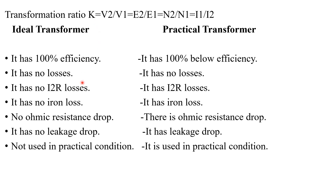Now let us discuss about the difference between ideal and practical transformer. In the case of an ideal transformer, its efficiency will be 100%. For a practical transformer, its efficiency will be below 100%. An ideal transformer has no losses, while a practical transformer has losses. An ideal transformer has no I-squared-R or copper losses, whereas a practical transformer has copper losses and iron losses. The ohmic resistance of an ideal transformer is considered as zero, but there will be some ohmic resistance in a practical transformer. The leakage reactance drop will be zero for an ideal transformer, but a practical transformer has some leakage reactance. An ideal transformer has no practical use — it is not possible to use it in practice — so practical transformers have practical uses.